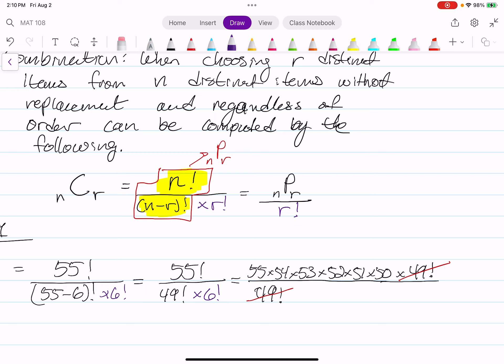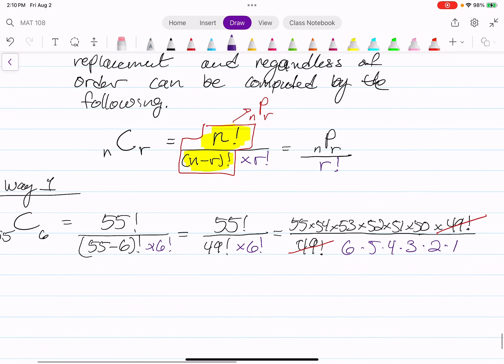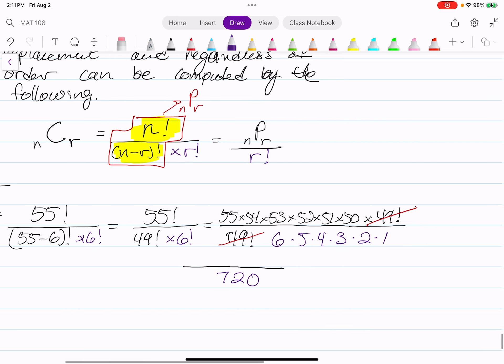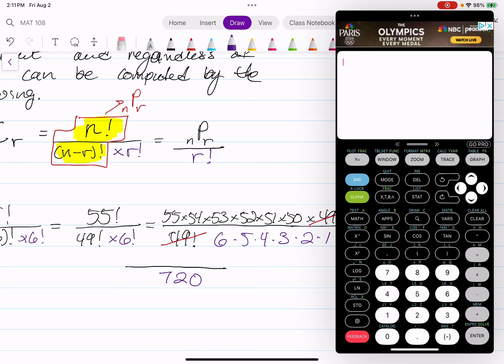That 6 factorial over there is chilling. Now we can worry about that. We can expand this one. That's just 6 times 5 times 4 times 3 times 2 times 1. So I know the denominator is 720 because we multiplied this a couple of times already. And now let's multiply 55 down to 50. 55 times 54 times 53 times 52 times 51 times 50. Oh, that is a huge number.